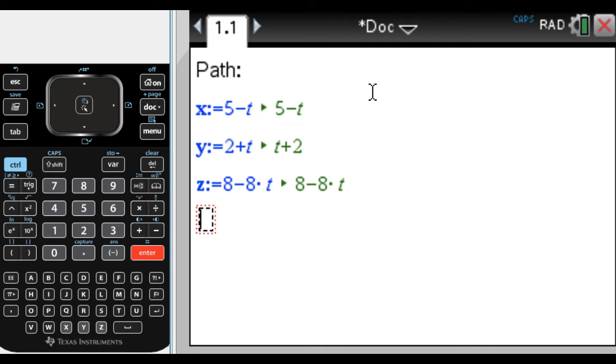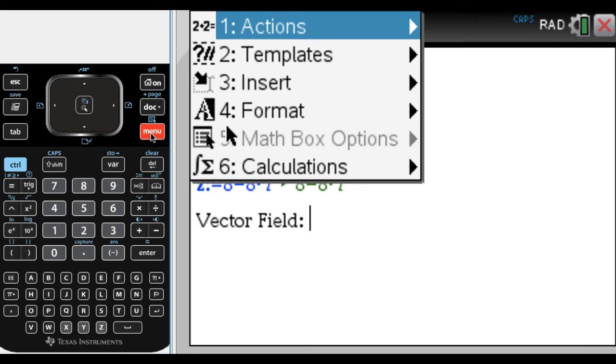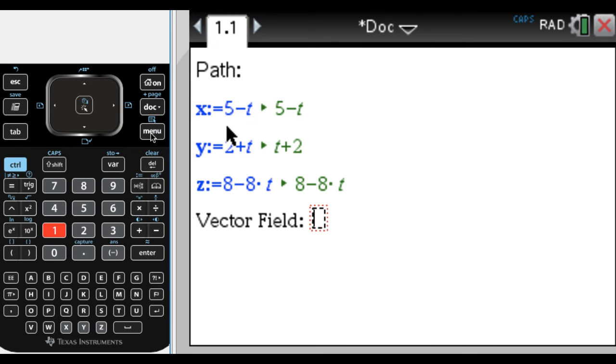And then the next thing I want to do is I want to define the vector field. And so I'm going to say vector field. You don't have to type in what everything is, but I like to do that. And then I want a math box, so menu 3, 1. And what I'm going to do here is I'm just going to call this F. I'm not going to do F of T or anything like that. I'm going to do F colon equals. And then I want to put in a vector. So it's control and then open parentheses gives you this.